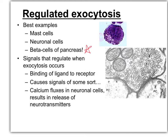The signals that result in regulated exocytosis can be the binding of a ligand to a cell surface receptor that leads to intracellular signaling. It could be the interaction of two cells with one another, or the formation of some bond that activates something in the cell. In the case of mast cells, it is the binding of an antigen. An antigen binds to a receptor on mast cells and causes the release of histamine. All of these little blue packets are vesicles filled with histamine, and in this mast cell they will be dumped out immediately because the receptor is waiting to bind that antigen.